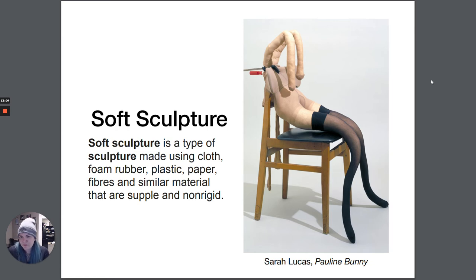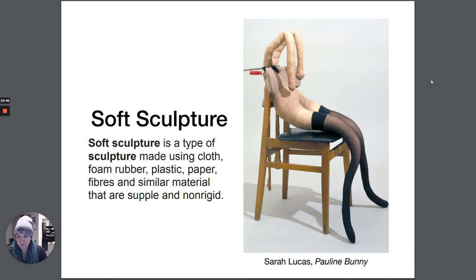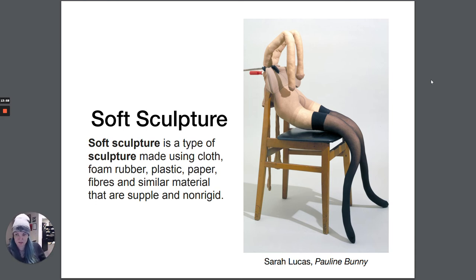Soft sculpture is a kind of sculpture made using cloth, foam, rubber, plastic, paper, fibers, and similar materials that are supple and non-rigid. For a long time in art history, sculptural forms were limited to stone, metal, ceramics, and resin — things that are hard. That definition expanded quite a bit, particularly with the feminist art movement in the 1960s. One of the earlier soft sculpture artists — maybe the earliest — was Yayoi Kusama. She's famous for her infinity rooms, and we talked about her when we talked about installation art, but she also made soft sculpture installations and was a forerunner, saying three-dimensional work doesn't have to be rigid and made out of stone or metal.